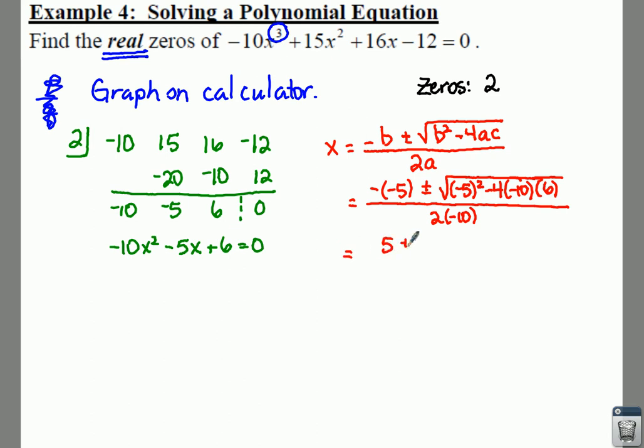If we clean this up a little bit, this will give us a positive 5 out here plus or minus, you're going to have 25 plus 240. 25 plus 240 is 265, all over -20. So the good news is you don't have to simplify any of this.